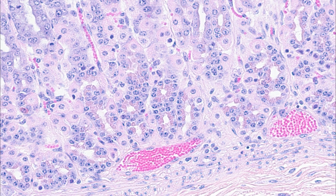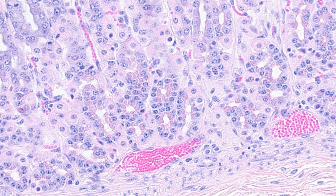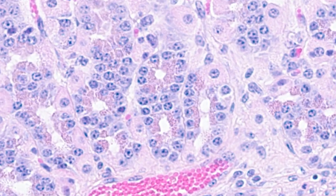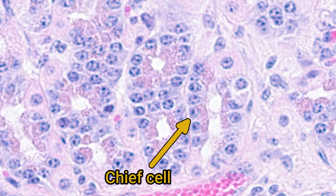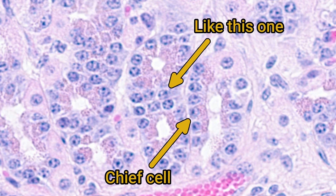The other obvious cell type are the chief cells, also called peptic or zymogenic cells. These cells are roughly pyramid shaped and have prominent granular cytoplasm — essentially the opposite of the parietal cells. You can see the granules really well in this section. Some of the cells have fewer granules but really basophilic cytoplasm. This is because there's lots of nucleic acid in the cytoplasm in the form of RNA, due to the large amount of protein synthesis occurring. Chief cells secrete pepsinogen, which is the inactive precursor of the proteolytic enzyme pepsin.